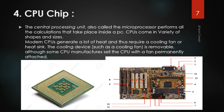Now we have the CPU chip. This chip is the brain of the computer. We call it the Central Processing Unit, also called the microprocessor. It performs all the calculations that take place inside a PC. CPUs come in a variety of shapes and sizes. Modern CPUs generate a lot of heat and require a cooling fan or heat sink.